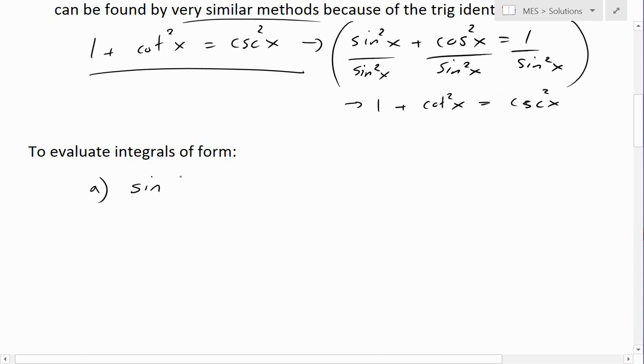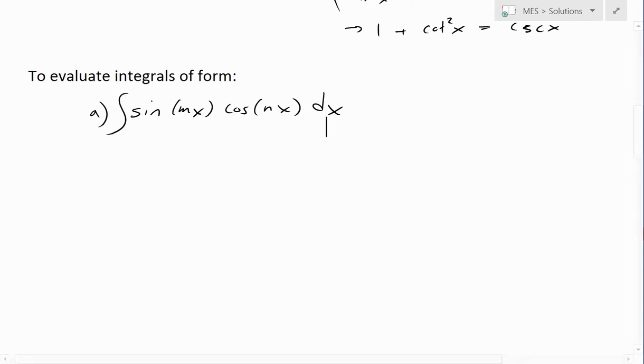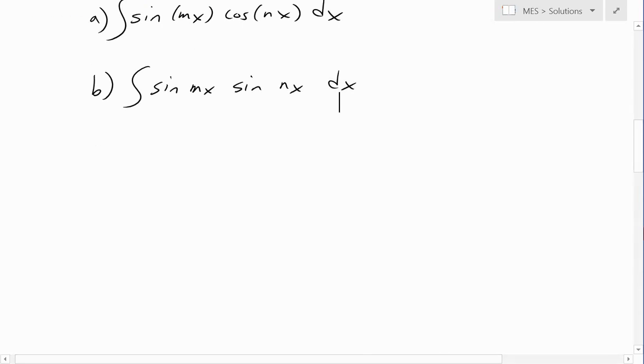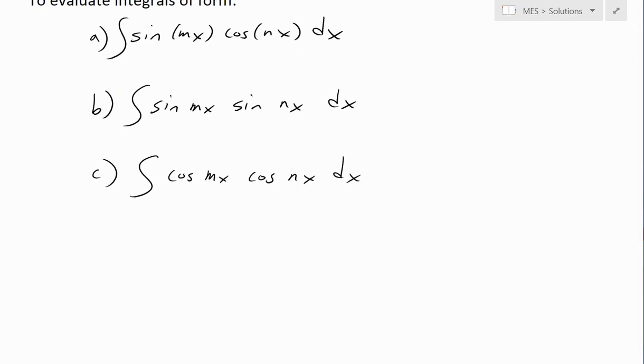Type A which is integral of sine m of x times cosine n of x dx. That's the first type and this first type is part of our example. Type B is sine m of x and then sine n of x dx. And then another third type C is cosine m of x times cosine m of x dx. Now these ones, these kind of integrals, we can greatly simplify them by applying the following trig identities.